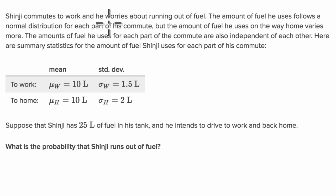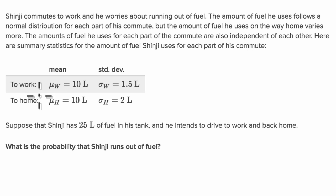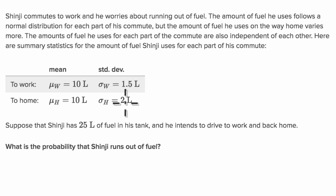Shinji commutes to work and worries about running out of fuel. The amount of fuel he uses follows a normal distribution for each part of his commute, but the amount he uses on the way home varies more. The amounts for each part are also independent of each other. When he goes to work he uses a mean of 10 liters with a standard deviation of 1.5 liters, and on the way home also a mean of 10 liters but a standard deviation of 2 liters.